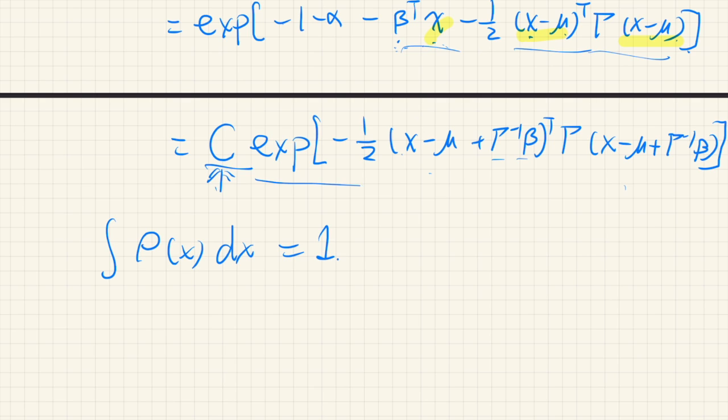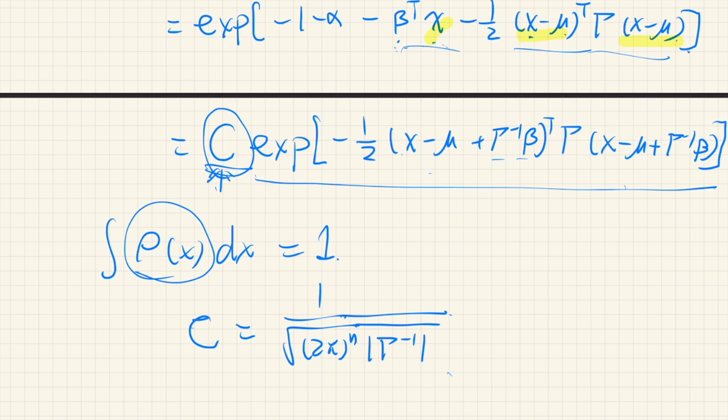So if we integrate this exponential function over the entire space, then this c should be 1 over square root of (2π)^n times the determinant of Γ^(-1). So if we set like this, then ρ, the density function, is normalized. This is a standard result from the Gaussian integral, which I have another video for that.